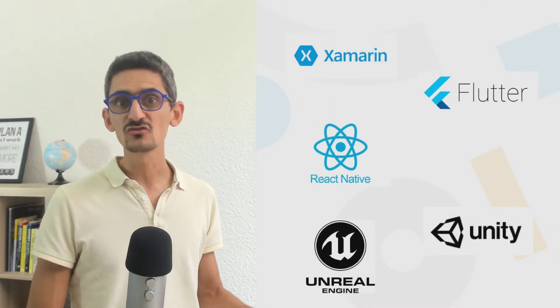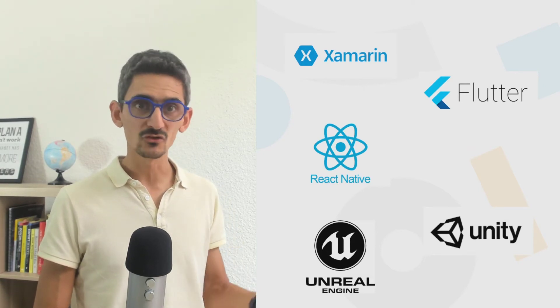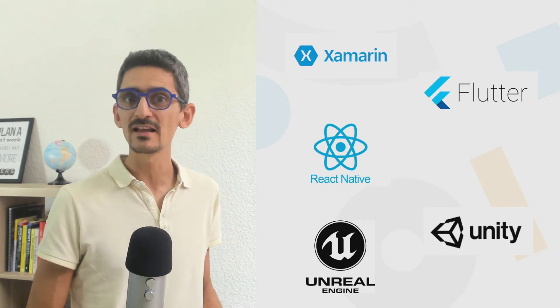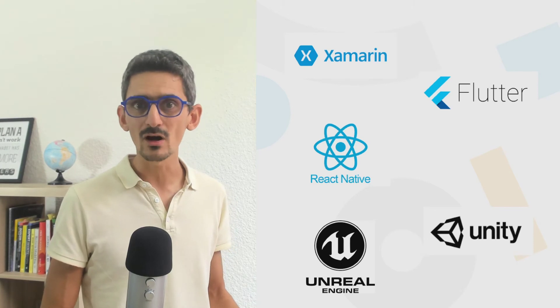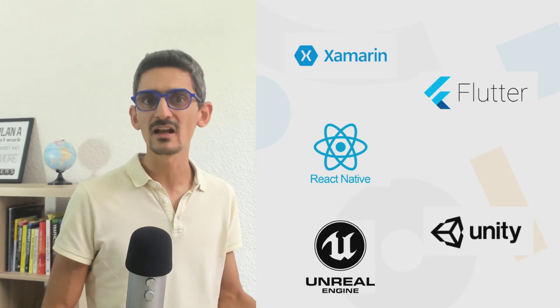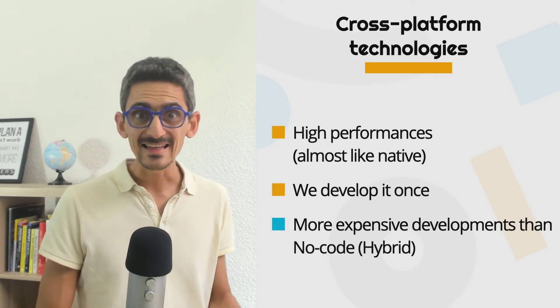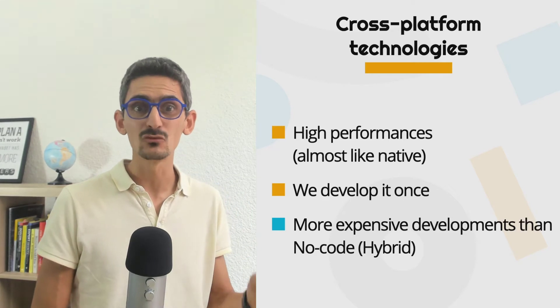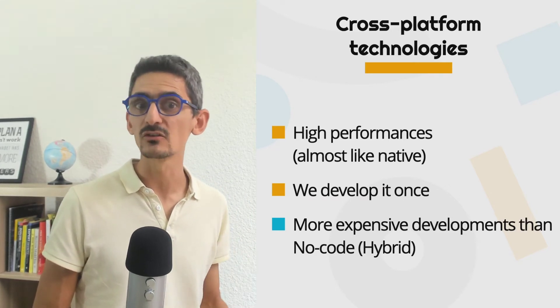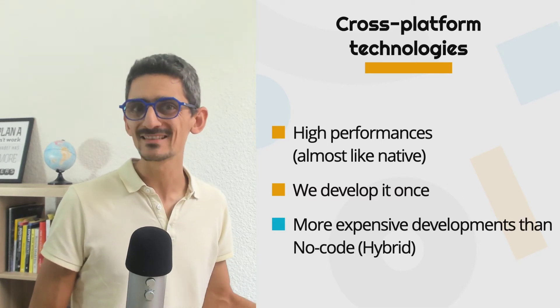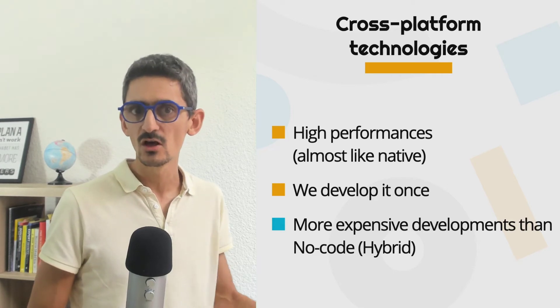Now let's talk about cross-platform. Cross-platform means that we can compile and run an application on different platforms, with a final application that is almost native. The most common technologies are Xamarin, the oldest one, and also React Native and Flutter, which are the most common ones nowadays. There are also other cross-platform technologies more adapted for games, virtual reality, and augmented reality — those are Unity and Unreal. The big advantage of cross-platform is that the app can be developed once and converted into near-native code, which is way faster than hybrid technologies, and we can use between 60 to 90% of the smartphone's capacity.